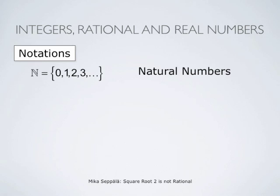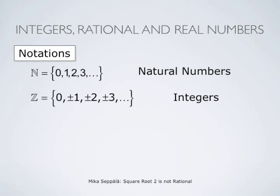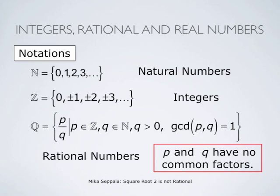Natural numbers are denoted by capital N. The set of integers, capital Z, consists of 0, plus and minus 1, plus and minus 2, plus and minus 3, and so forth — that is, 0 and positive and negative integers. Rational numbers are ratios of integers; they are of the form P divided by Q, where P and Q are integers.